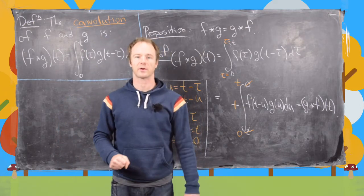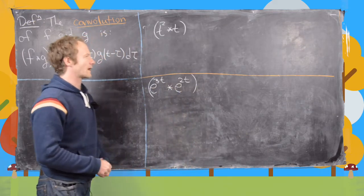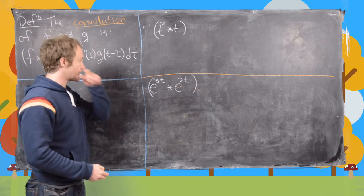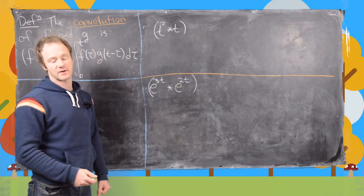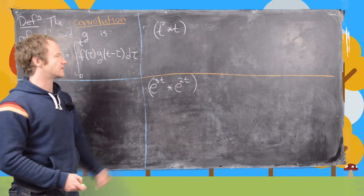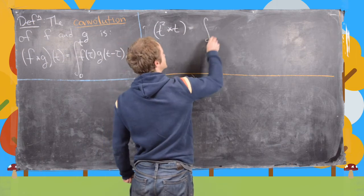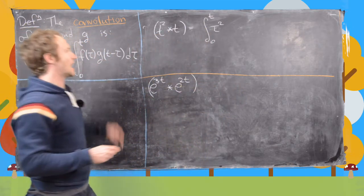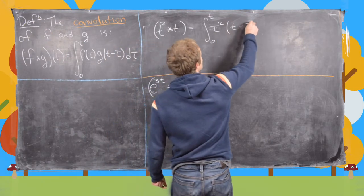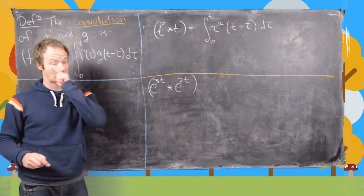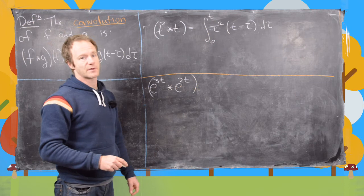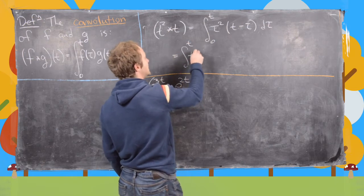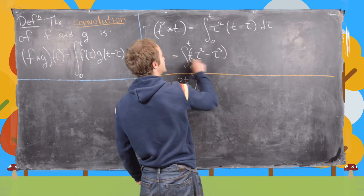Now I'll clean up the board and look at two simple examples of convolution. First, we'll compute t²★t — that is, f(t) = t² and g(t) = t. This gives the integral from 0 to t of f(τ) g(t − τ) dτ, which is the integral from 0 to t of τ² times (t − τ) dτ. Since t is a constant with respect to integration, we expand to get the integral from 0 to t of t·τ² minus τ³ dτ.